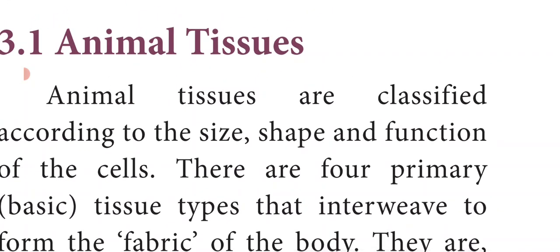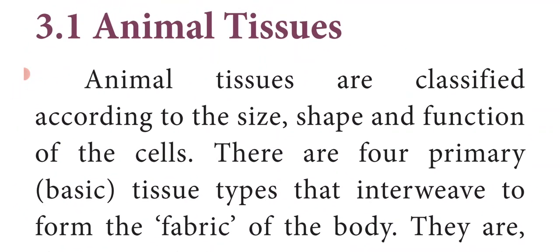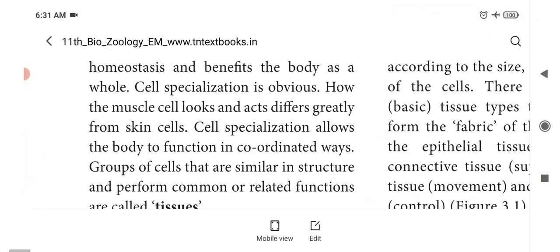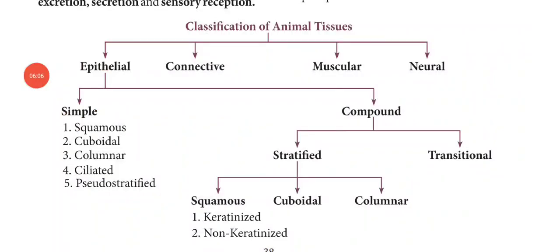We are going to learn about the animal tissues. Animal tissues are classified according to the size, shape, and functions of the cells. There are four primary tissue types that interweave to form the fabric of the body. Animal tissues are classified into four types: epithelial tissue, connective tissue, muscle tissue, and nervous tissue.